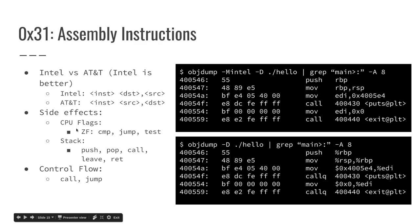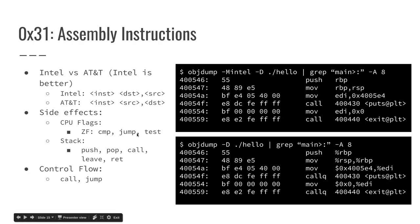What that allows is for another instruction to make use of the zero flag to say something like 'do something if these two values are equal.' When subtraction sets the zero flag, the next instruction that says 'do something if these two values are equal' knows they were in fact equal. Instructions like push, pop, call, leave, and ret actually do stuff to the stack in addition to whatever else they do.